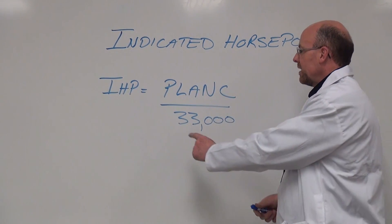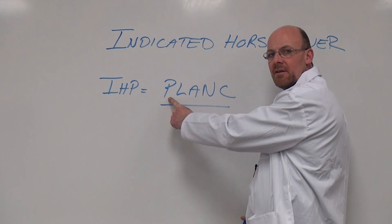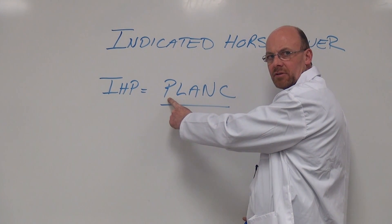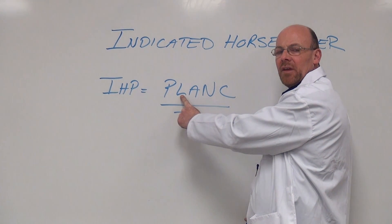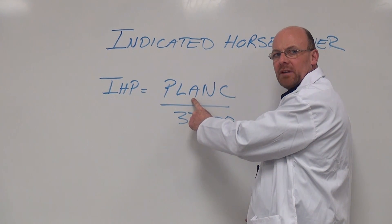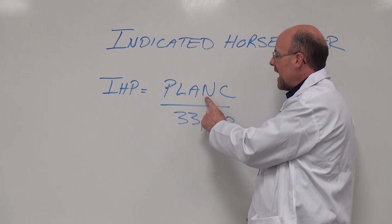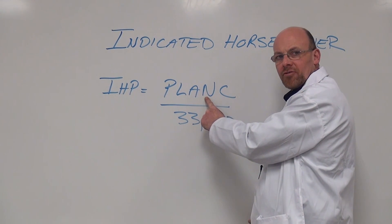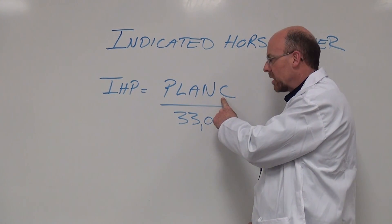When we take a look at PLANK: P equals pressure, or mean effective pressure in the cylinder. L is indicative of length in stroke feet. A is indicative of area — we did a calculation earlier on area. N is the number of power strokes the engine produces. And C is the number of cylinders in application.